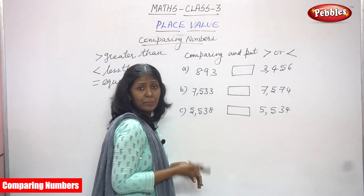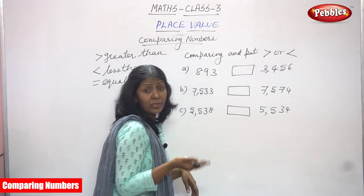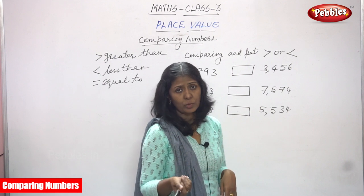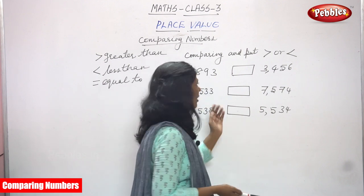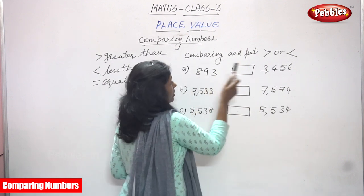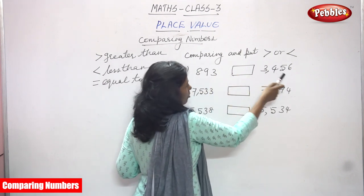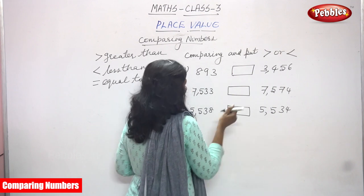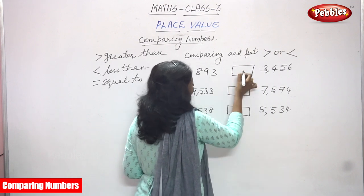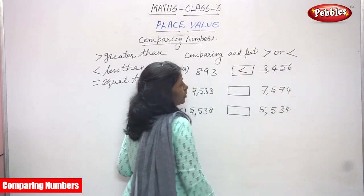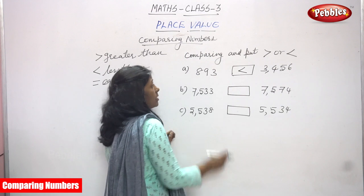So you have to compare the three-digit as well as the four-digit number. You know which is the greater number — surely a four-digit number is the greater one. So 893 is less than 3456.